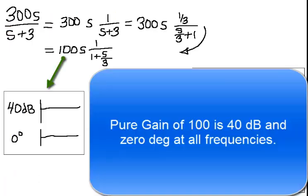Pure gain of 100 is 40 dB and 0 degrees at all frequencies.